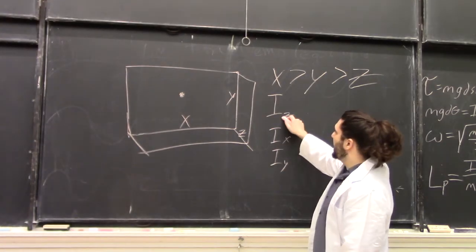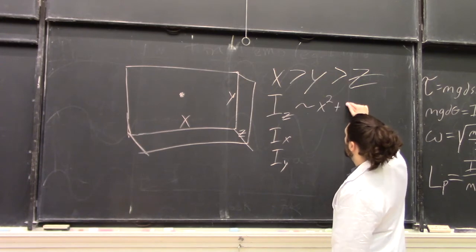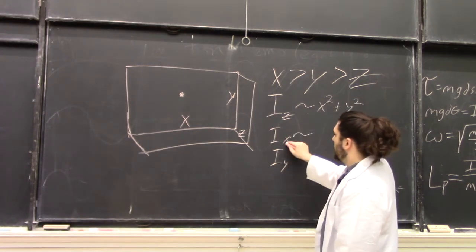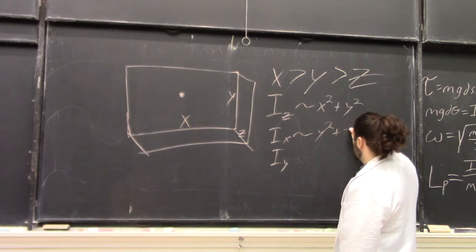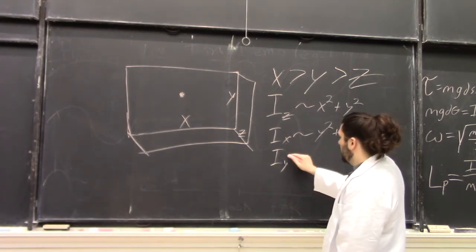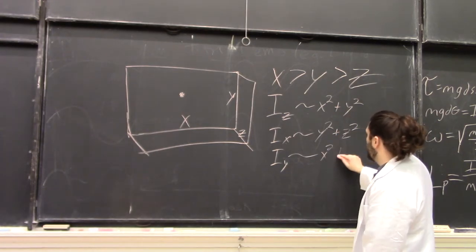If we rotated about the z-axis, the moment of inertia goes as x squared plus y squared. The moment of inertia about the x-axis, y squared plus z squared. And about the y-axis, x squared plus z squared.